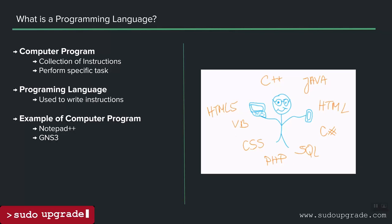For those coming from a computer engineering background, it's a bit more complicated than that — whether you have an interpreter or compiler, it gets converted into machine code. But just being very agnostic: a programming language is a way to communicate with a computer. Just like we have English, French, Urdu, Arabic, German — there are different types of programming languages: C++, Java, SQL, PHP, Visual Basic, C#, and Python, which is what we're covering.